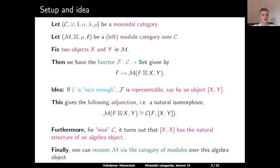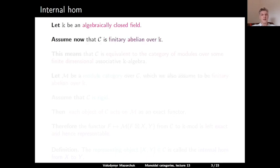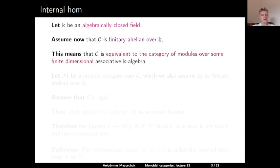Let us go into details. We start with a definition of the notion of an internal hom. Let k be an algebraically closed field and assume that our category C is finitary abelian over k — in other words, this category is equivalent to the category of modules over some finite dimensional associative k-algebra.